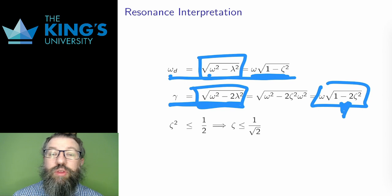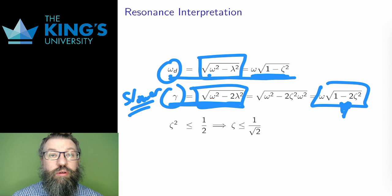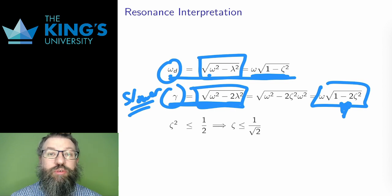There are two things to notice about this. First, this is slower than the damped frequency. Unlike the frictionless case where matching the natural frequency produced the growing amplitude, friction really does change the system. The resonant frequency is quite a bit slower than even the damped frequency, which is itself slower than the natural frequency.